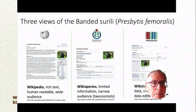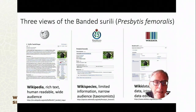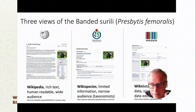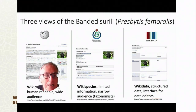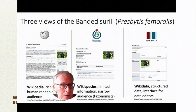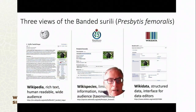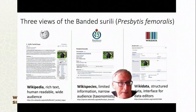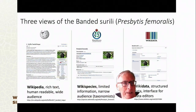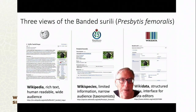One of the things that is challenging is that there are lots of different wikis with all sorts of different kinds of information, and this information can be presented differently. For example, if I'm interested in a monkey called the Banded Surili, which is found in Singapore and other parts of Southeast Asia, I can go to Wikipedia and get human-readable information. I can go to Wikispecies, which is quite an interesting wiki — one of the few focused on a particular topic rather than being global in scope but differing in language.